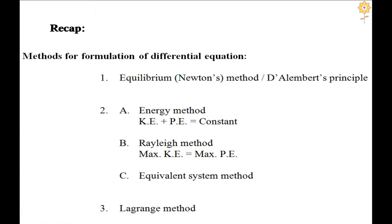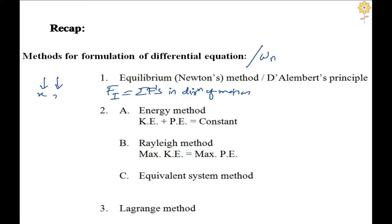In the recap, we have seen the methods for formulation of a differential equation to get the value of omega_n. The first is Newton's equilibrium method, where we state that inertia force is equal to the summation of remaining forces in the direction of motion. Wherever we show displacement in the FBD, we show x-dot and x-double-dot, and multiplying x-double-dot with m gives the inertia force. D'Alembert's principle states that the summation of inertia force plus all forces equals zero — so both are equivalent.